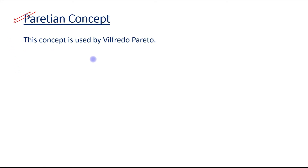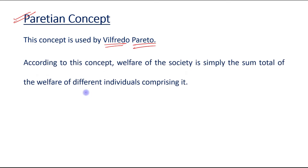The next concept is the Paretian concept, given by Wilfredo Pareto. According to this concept, the welfare of the society is simply the sum total of the welfare of different individuals comprising it.